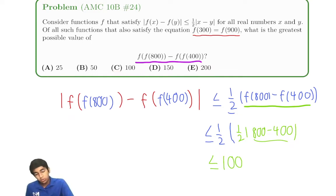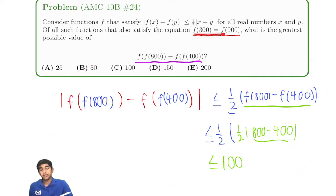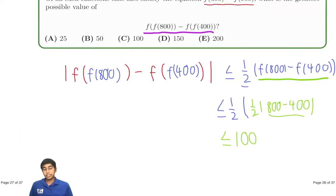Well, actually not, because we also have this condition. f(300) equals f(900). So whatever this function that satisfies this may not necessarily satisfy this. So how do we somehow use this condition? That's what we're going to try to do.